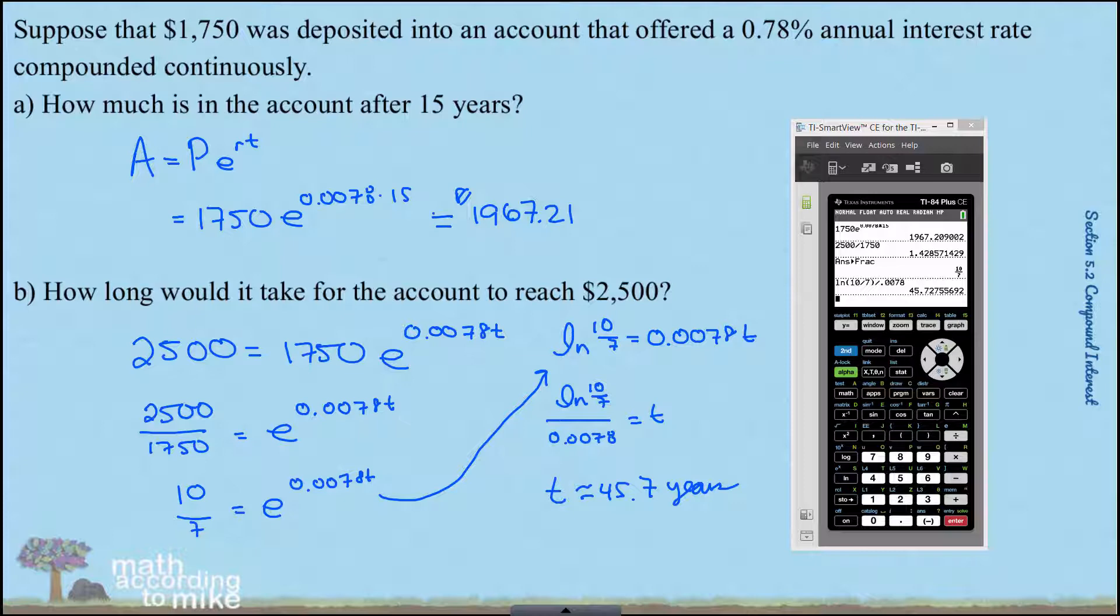We knew that our answer is bigger than 15 because after 15 years, it grew to $1,967. And we want to get to $2,500. So our answer makes sense, but 45 years is still a stretch from 15 years.